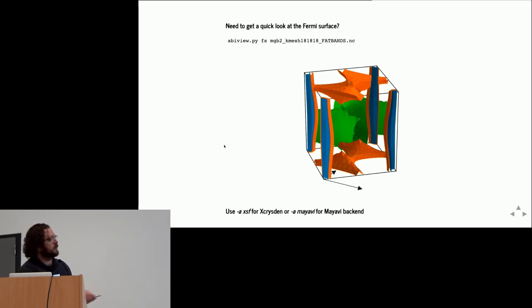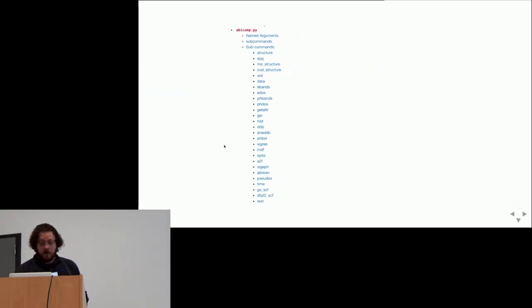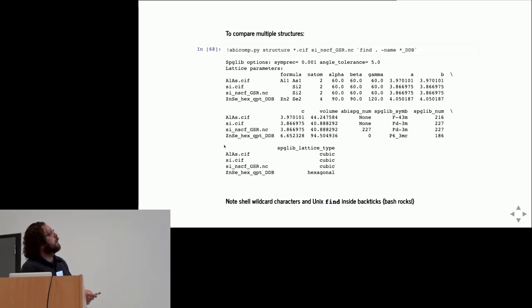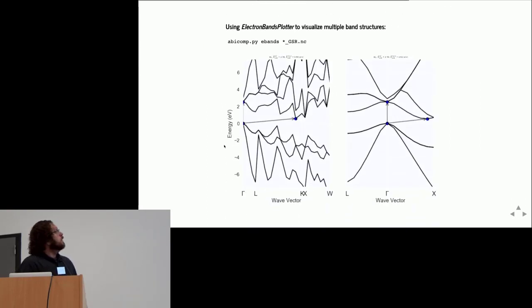Another script is abicomp that operates on multiple files to perform convergence studies. Simplest example: I have a bunch of files with structures and I want to compare the lattice parameters. Here I can use the shell syntax, like star or Unix find within backticks, to select all the files in my working directory according to the file extension. This is the table that you get on the terminal. Obviously, if you're inside the Jupyter notebook, you get an HTML table that is much more readable. If I replace structure with bands, I can compare band structures.